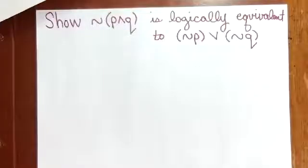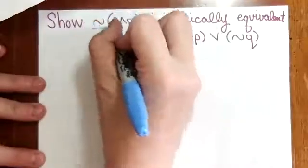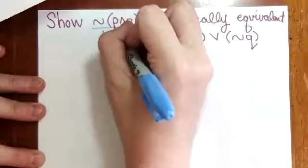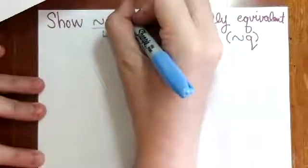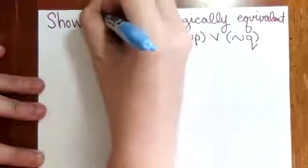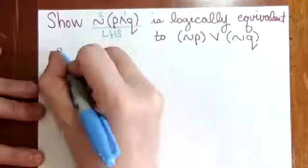Alright, let's show that the negation of P and Q is logically equivalent to NOT P or NOT Q. First we'll look at the left-hand side by first ANDing the P and Q and then negating, using a truth table.